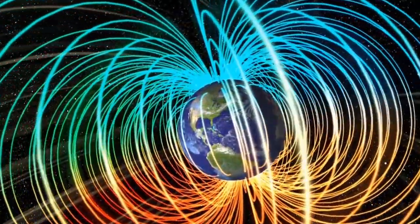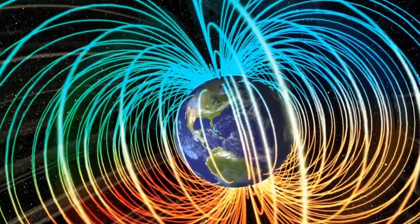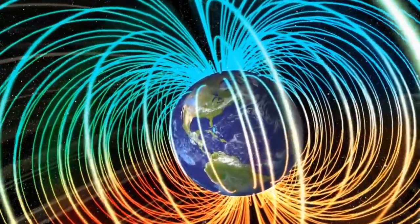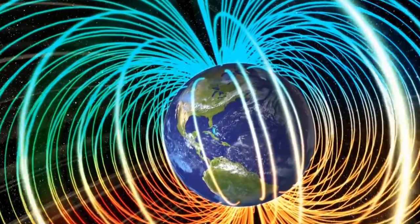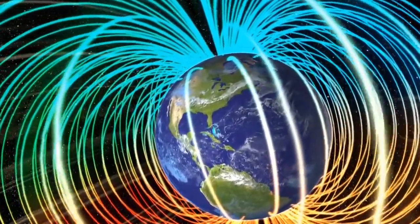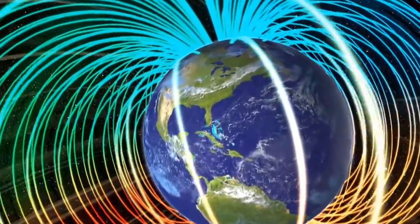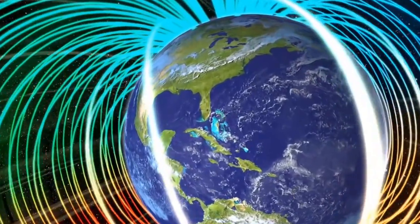Creating this global magnetic shield required special conditions. Earth had to be large enough to have a molten core and had to rotate fast enough to produce an electrical current that generates the planet's magnetosphere.